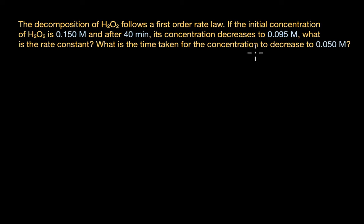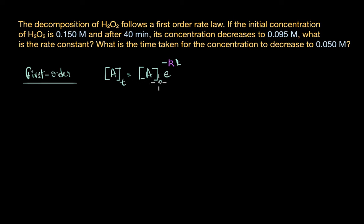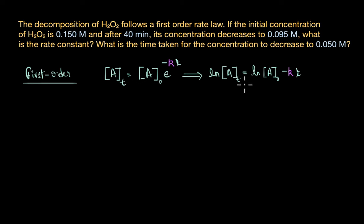To solve this question, since the reaction follows a first order rate law, we need to use the integrated rate equation for a first order reaction, which is: A_t = A₀ · e^(−kt). It can also be written as ln(A_t) = ln(A₀) − kt, where A_t is the concentration of hydrogen peroxide at time t (40 minutes), A₀ is the initial concentration, k is the rate constant, and t is the time taken.